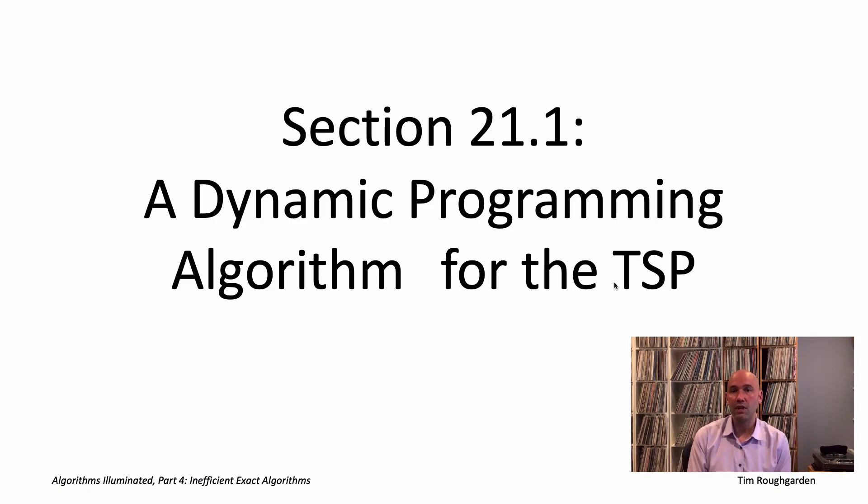We'll start in this video with section 21.1. We're going to apply an old friend, dynamic programming, to the traveling salesman problem. That'll give us an algorithm which, while exponential, is indeed quite a bit better than exhaustive search. We'll look at a second case study of dynamic programming, this time also involving randomization. It's an algorithm for finding long paths in networks, which is of interest in a bioinformatics context.